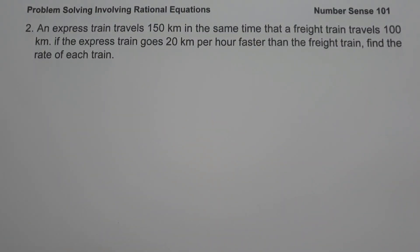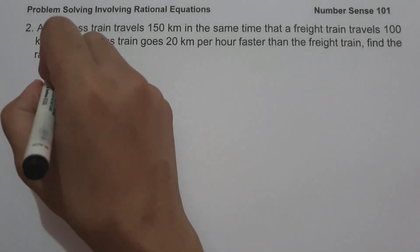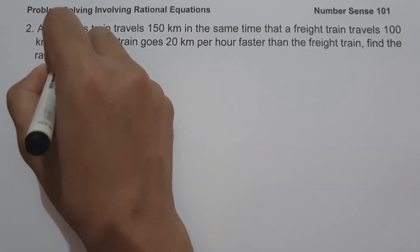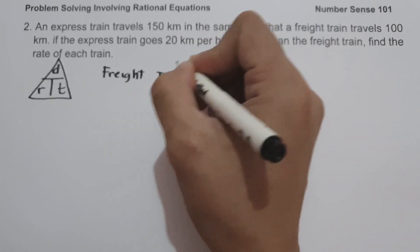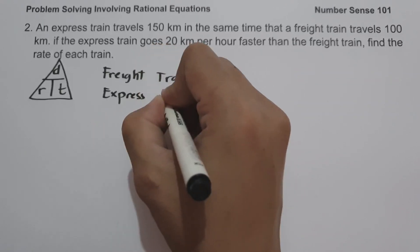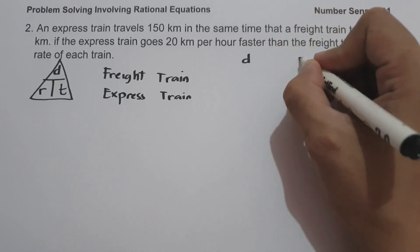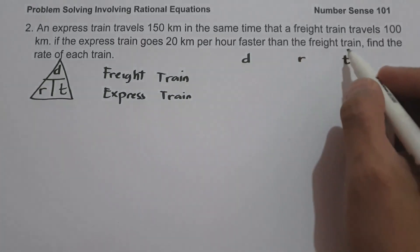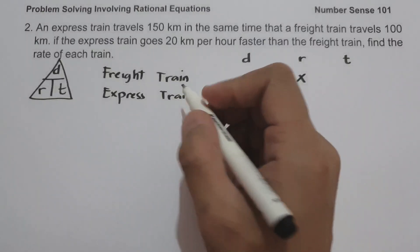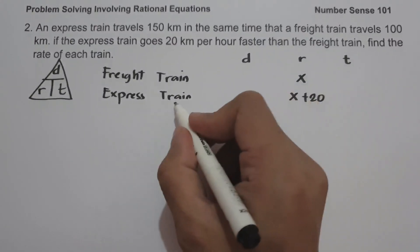On example number two, an express train travels 150 kilometers in the same time that a freight train travels 100 kilometers. If the express train goes 20 kilometers per hour faster than the freight train, find the rate of each train. To determine the rate of each train, let us use the formula for distance, rate, and time. Let us represent x as the rate of the freight train, and x plus 20 as the rate of the express train.